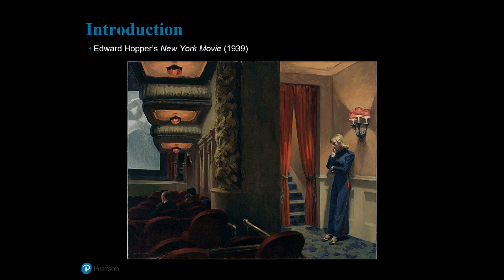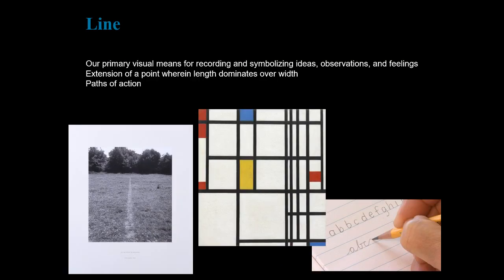You can formally analyze any work of art, but will each work you analyze have an example of every visual element? No. This artwork was strategically chosen by the author because it exemplifies each of the elements. Now let's slide into the first element, which is line. Line is our primary means for visual communication — the most basic means for recording and symbolizing ideas, observations, and feelings.